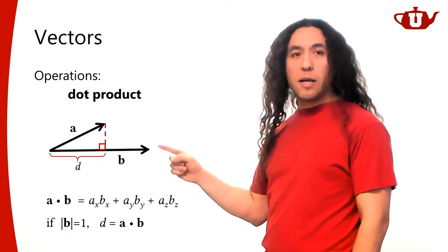For certain operations like solving optimization problems, much larger matrices — even a million by a million — are used. But for most operations in computer graphics we deal with two by two, three by three, and four by four matrices. The most common operation will be multiplying a vector by a matrix, which is the basic operation for transforming vectors from one coordinate frame to another.